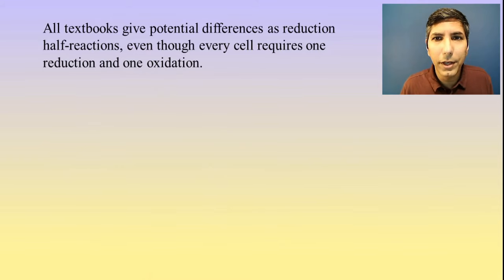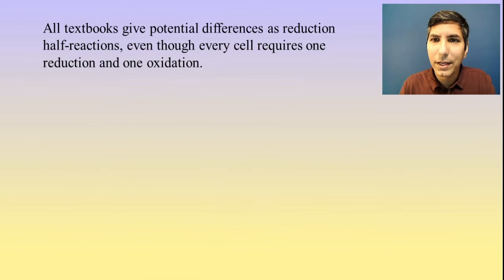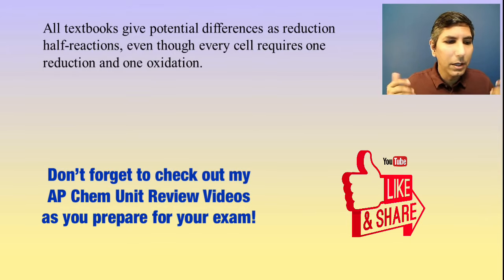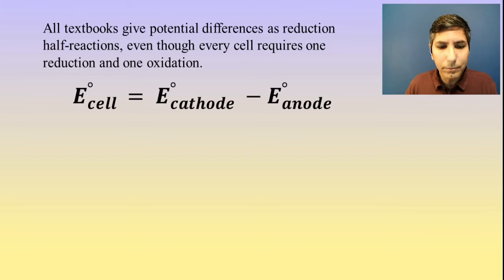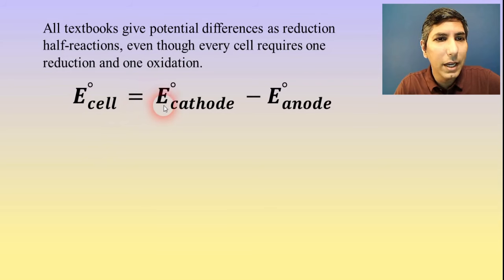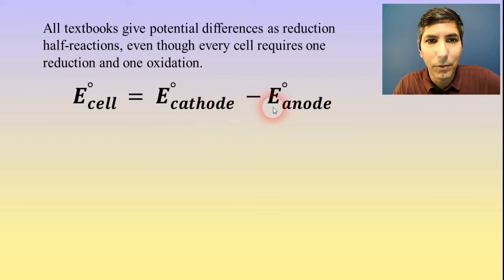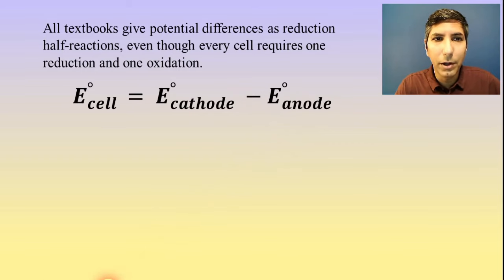In every redox reaction, every galvanic cell, we're going to have one reduction and one oxidation. Something has to be the cathode, something has to be the anode. However, every textbook and every listing always gives these half-reaction potential differences as reduction half-reactions — they're always written as reduction. So in order to account for that, when we calculate the overall potential difference of the cell, which we're going to call E-cell, we have to take the potential of the cathode as given on the chart and subtract the potential of the anode.